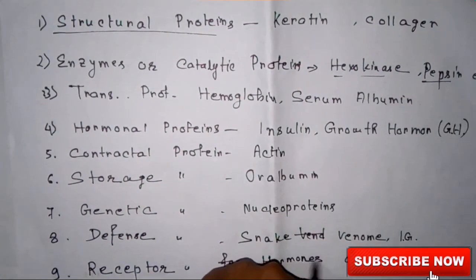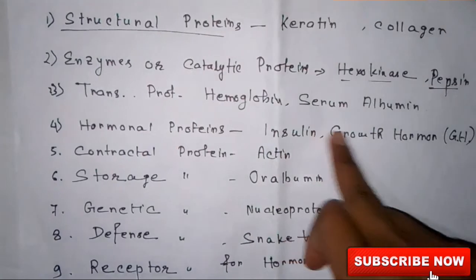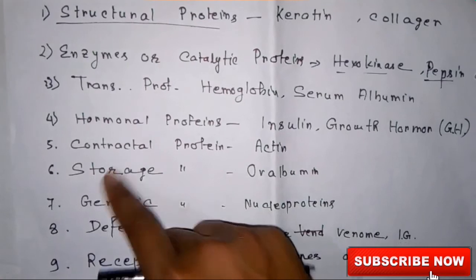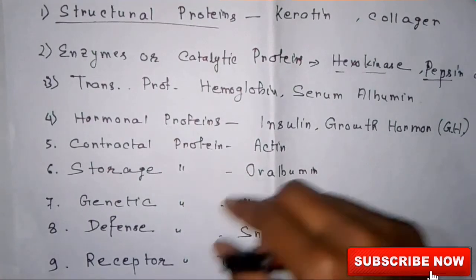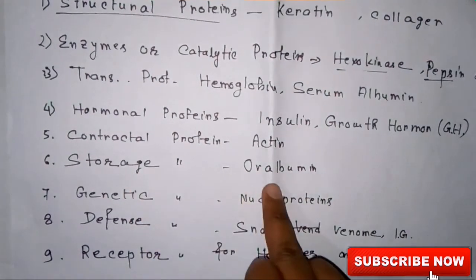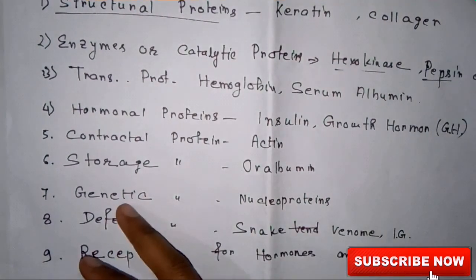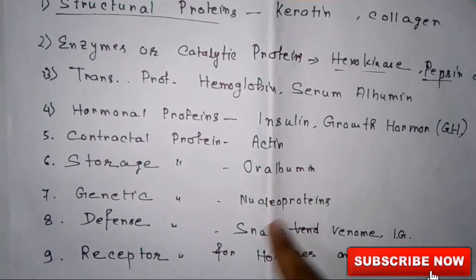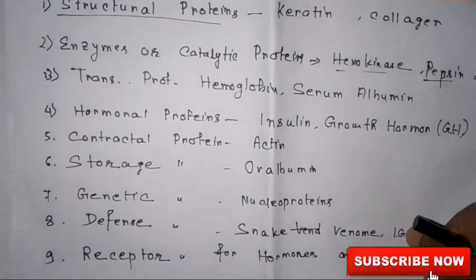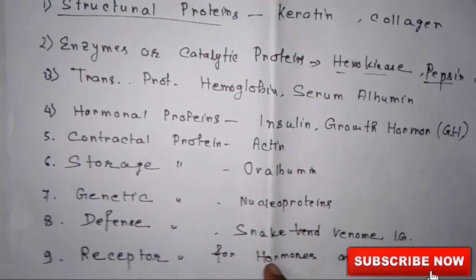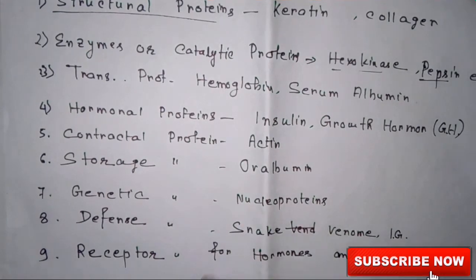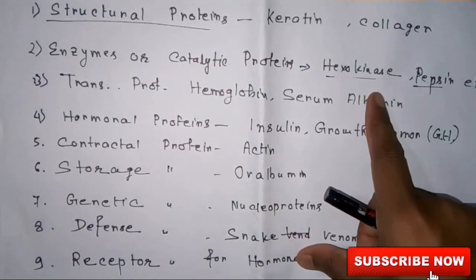Number six, storage protein, that is ovalbumin. Number seven, genetic proteins — nucleoproteins. Number eight, defense proteins — snake venom and immunoglobulin. Number nine, receptor proteins — for hormones and viruses, there are different receptor proteins. So these are the classification of proteins by their functions.